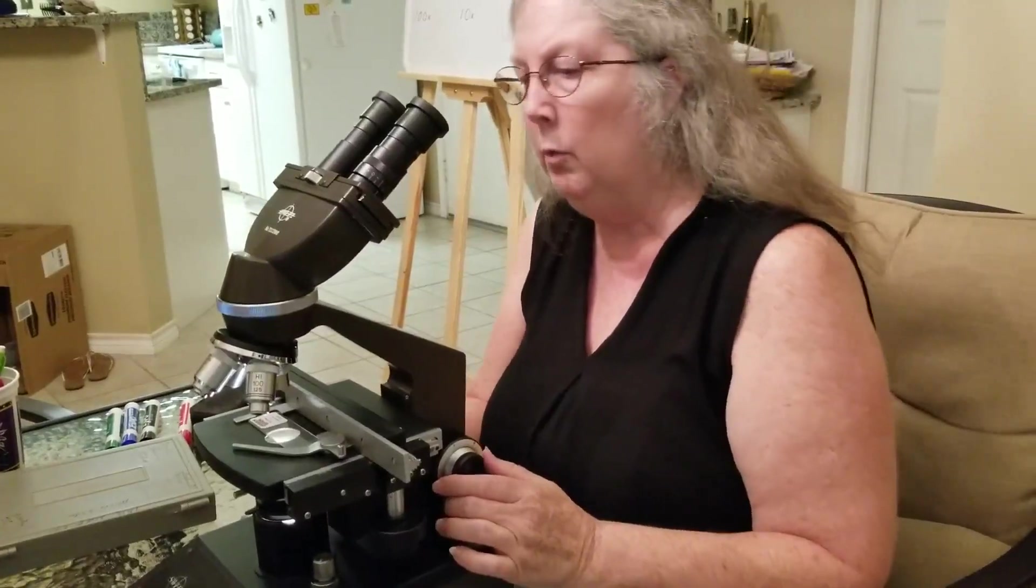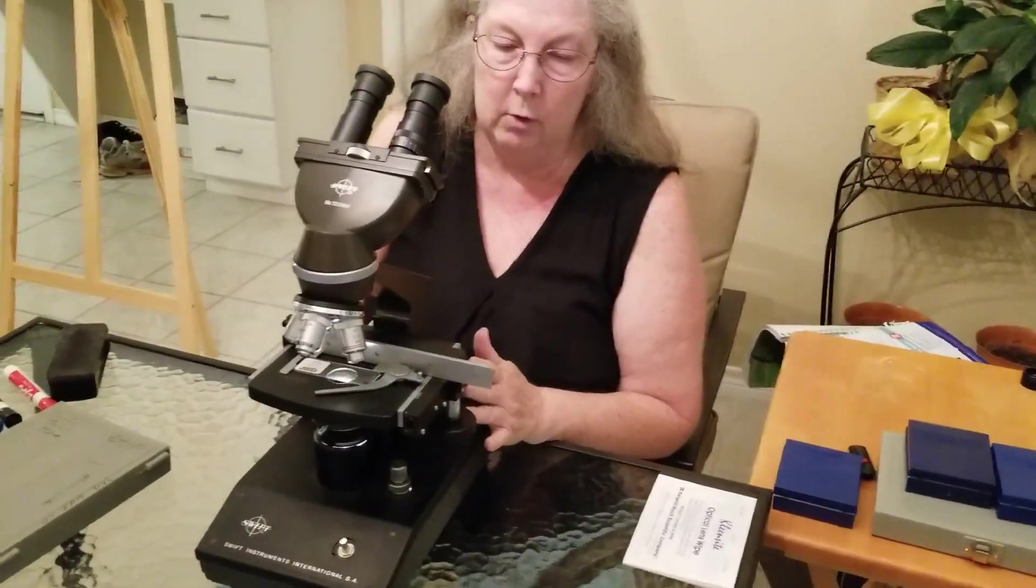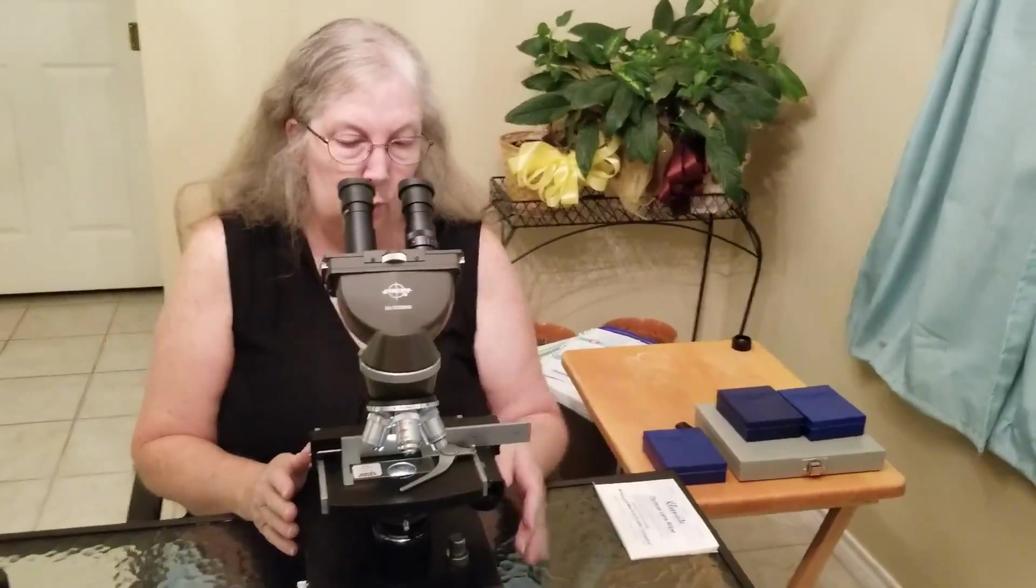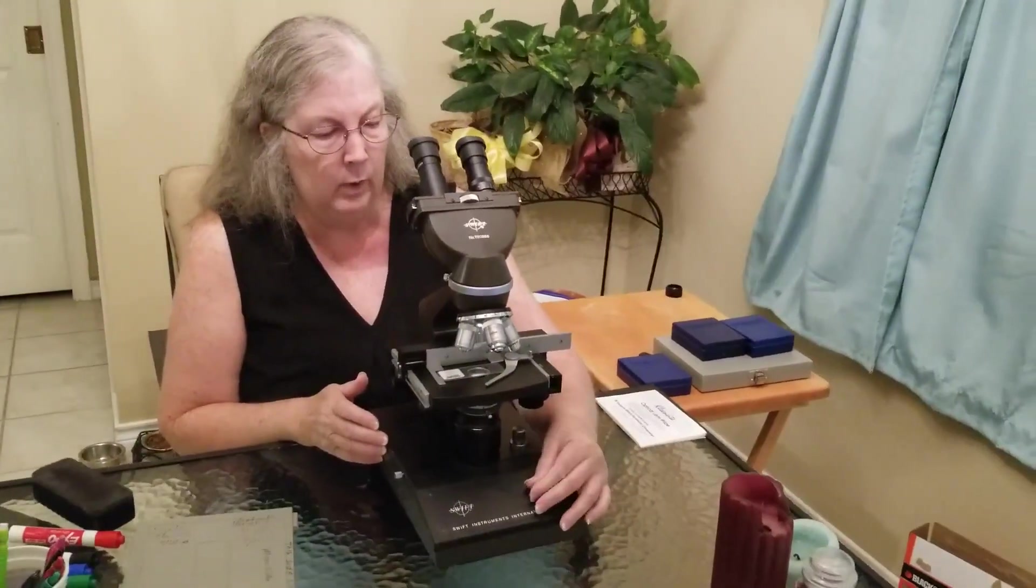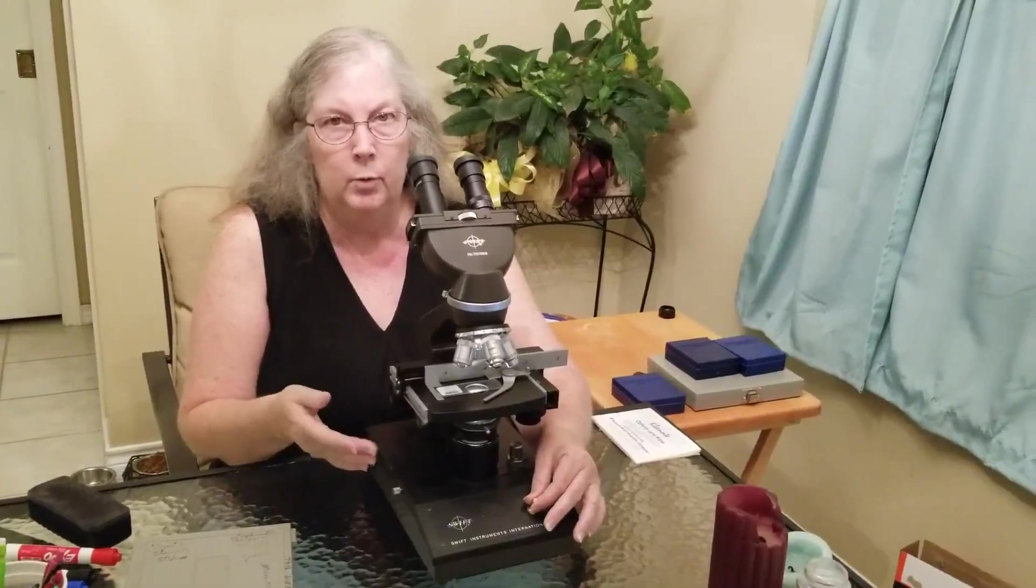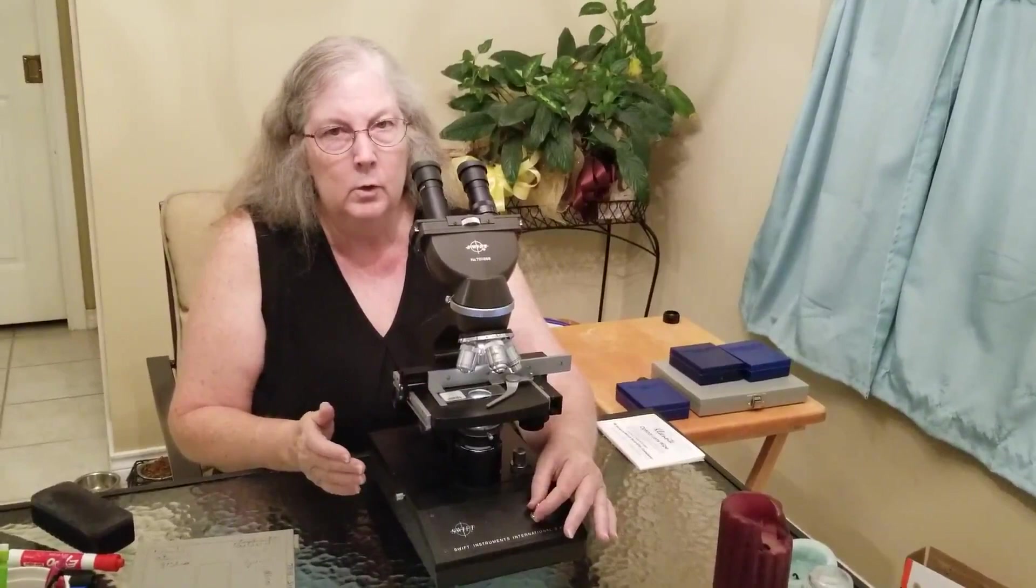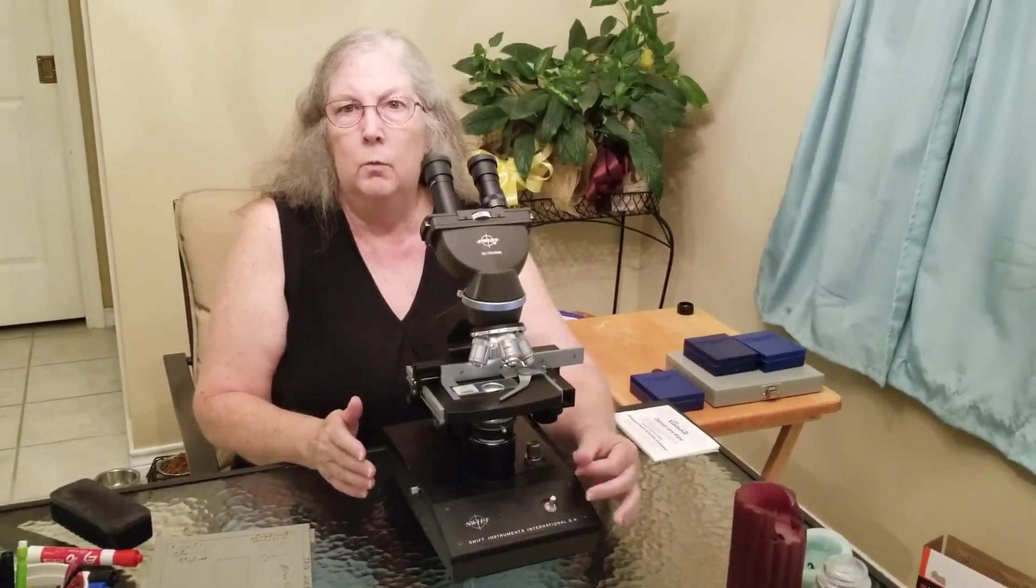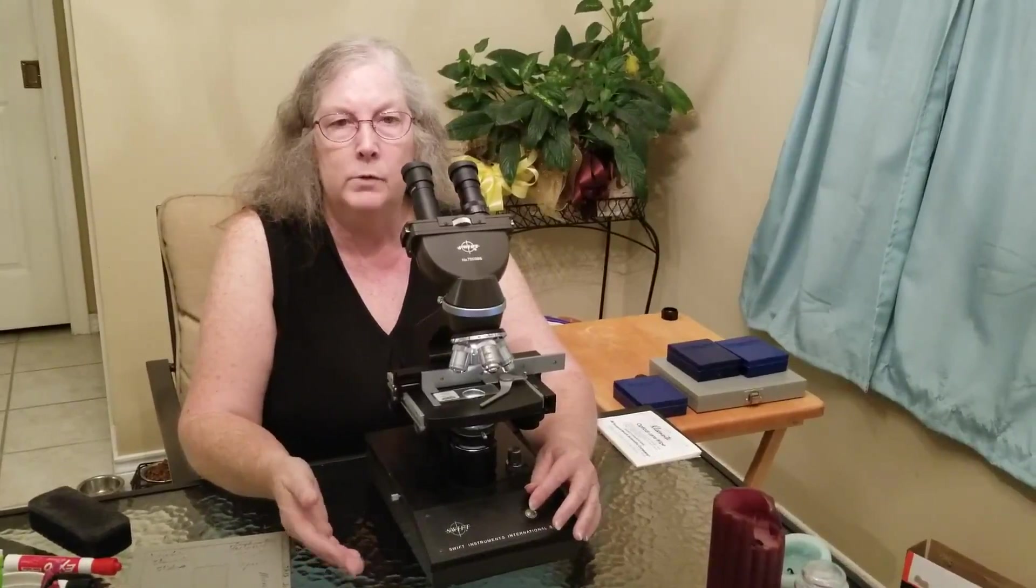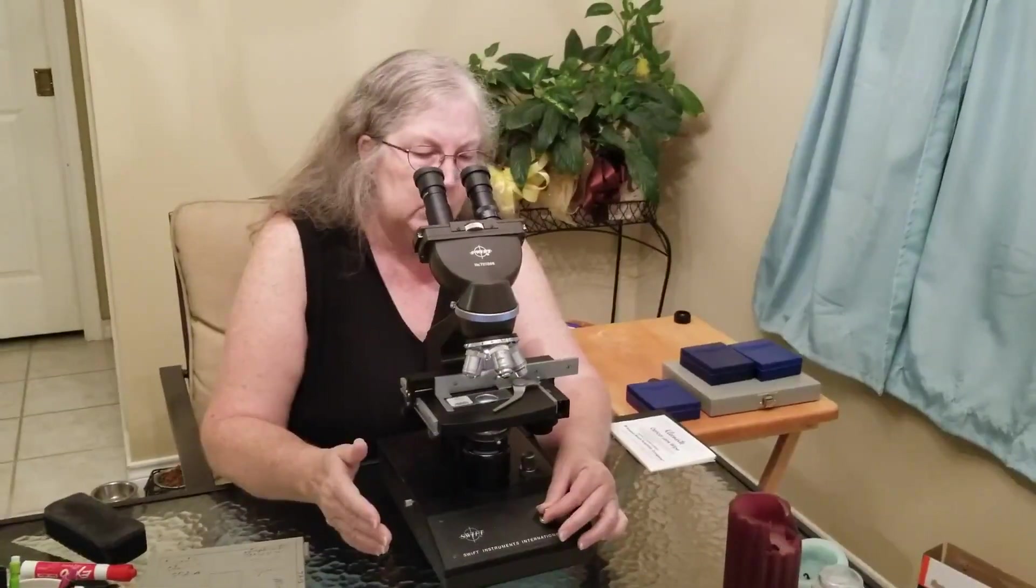So the way you would observe a specimen, well first before that when you get a scope it should have been stored with the light intensity all the way down low because oftentimes depending on the brand you will be able to adjust the amount of light that comes up. So it should be stored on low so that when the next person comes along and turns on the microscope you don't blow the bulb.